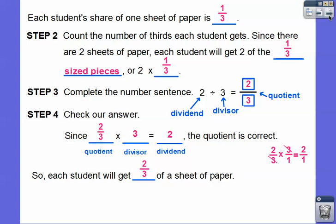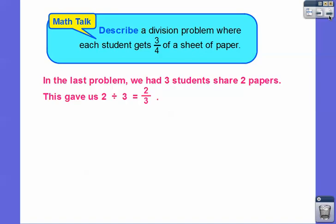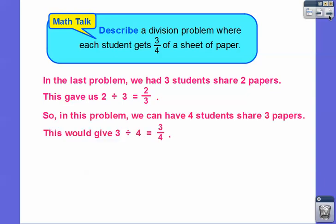They get a third on each piece. Describe a division problem where each student gets three-fourths of a sheet of paper. In the last problem, we had three students share two papers — that gave us two divided by three, which was two-thirds. So we could have four students sharing three papers, and that would give us three divided by four, which is three-fourths.